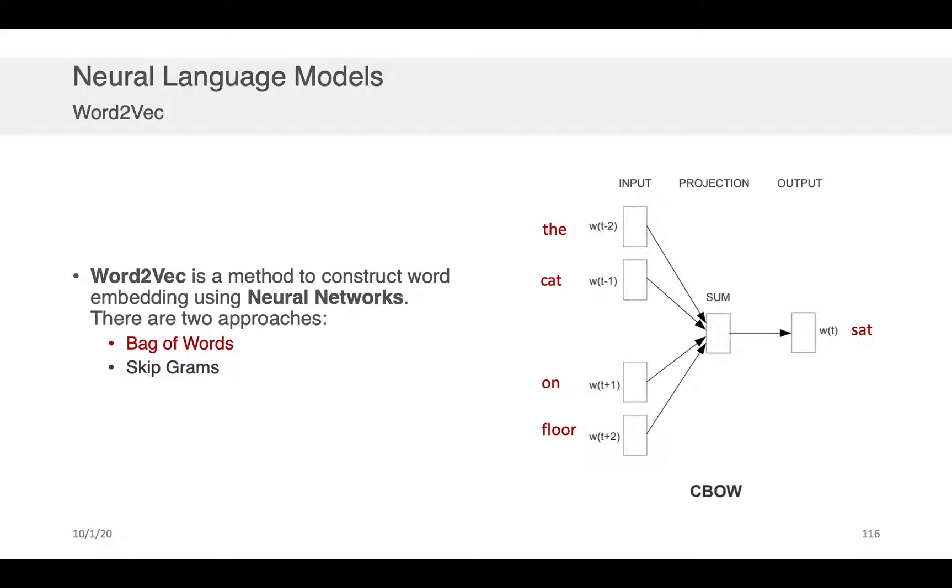The first of those techniques is what they refer to as the bag of words instantiation of Word2Vec. This is where you basically take as the input to the model a set of words that are neighboring words to some target. So let me sort of step you through this to make it clear. Let's assume we have the sentence 'the cat sat on the floor'. In this case what you do is you take 'the cat' and you put it as an input to your model, you have 'on floor' you put it as an input to the model, and you're trying to predict this word 'sat'.